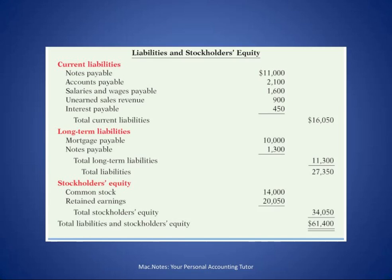On the liabilities side, total liabilities are $27,350. We have current liabilities — debts we'll have to pay in the near future — including notes payable, accounts payable, and salaries and wages payable. Some debts are paid over a 10-year period or longer; these are called long-term liabilities, such as mortgage payable and notes payable. So we separate liabilities into current liabilities and long-term liabilities.